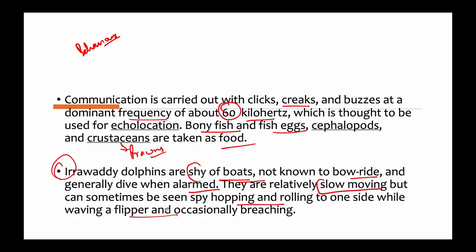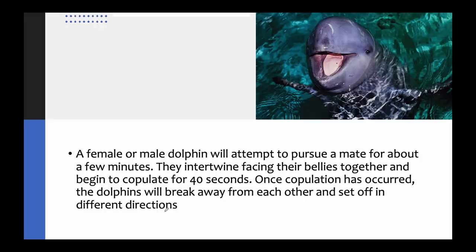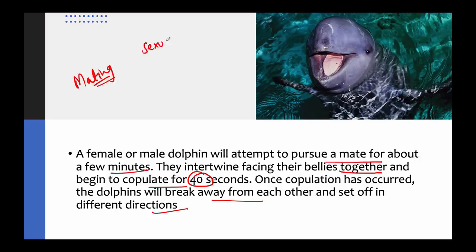Regarding mating, a female or male dolphin will attempt to pursue a mate for a few minutes, then they face their bellies together and begin to copulate for about 40 seconds, after which they break away and set off in different directions. These dolphins are thought to reach sexual maturity at seven to nine years. In the northern hemisphere, the mating period is reported to be from December to June.